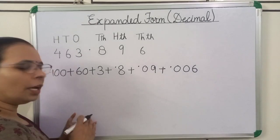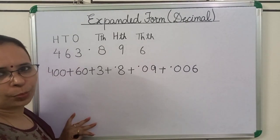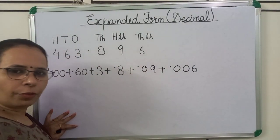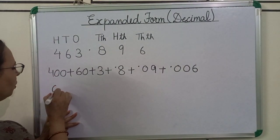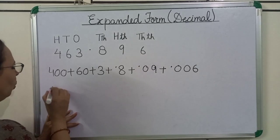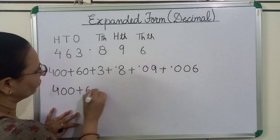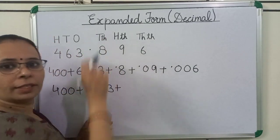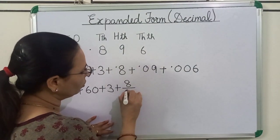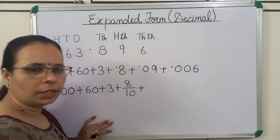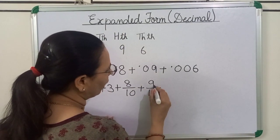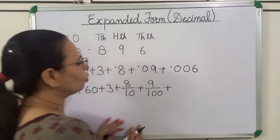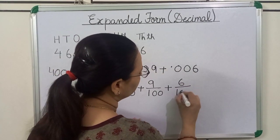Now we will learn the fractional form of expansion. We will expand the same number in fractional form. We will expand the whole number as it is. 8 is at the 10th place, so we will write 8 upon 10. 9 is at the 100th place, so we will write 9 upon 100. 6 is at the 1000th place, so we will write 6 upon 1000.